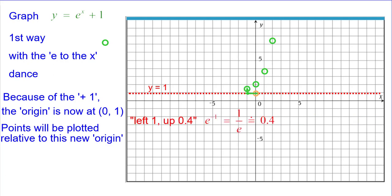Then going in the other direction, left 1 up about 0.4. The reciprocal of e is about 4 tenths. And then left 2 up 0.14, e to the negative 2 is approximately 0.14.